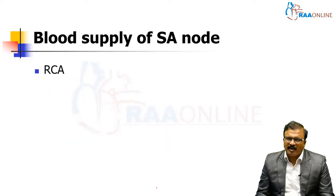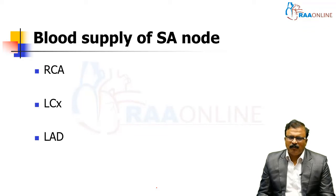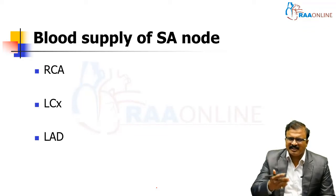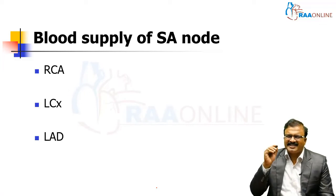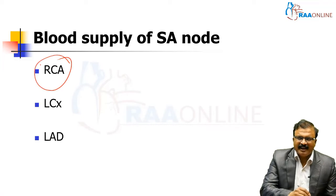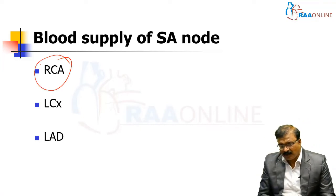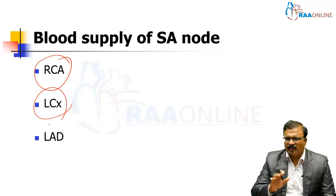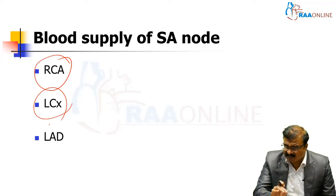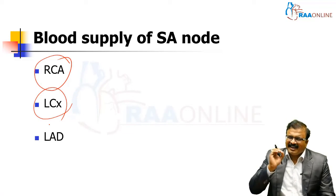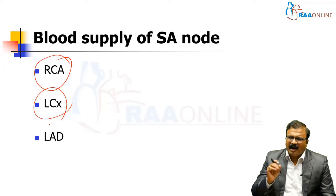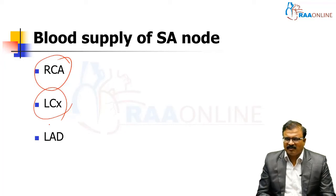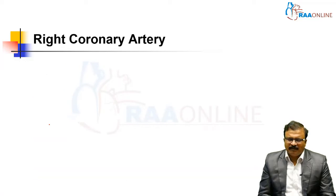The blood supply of the SA node is important. Of the major vessels — left circumflex, LAD, and RCA — the SA node is supplied by RCA in 85% of patients and LCX in the remaining patients. LAD has no role for the SA node. The significance is that if there is a right coronary occlusion, arrhythmias and blocks at the SA node will be common.